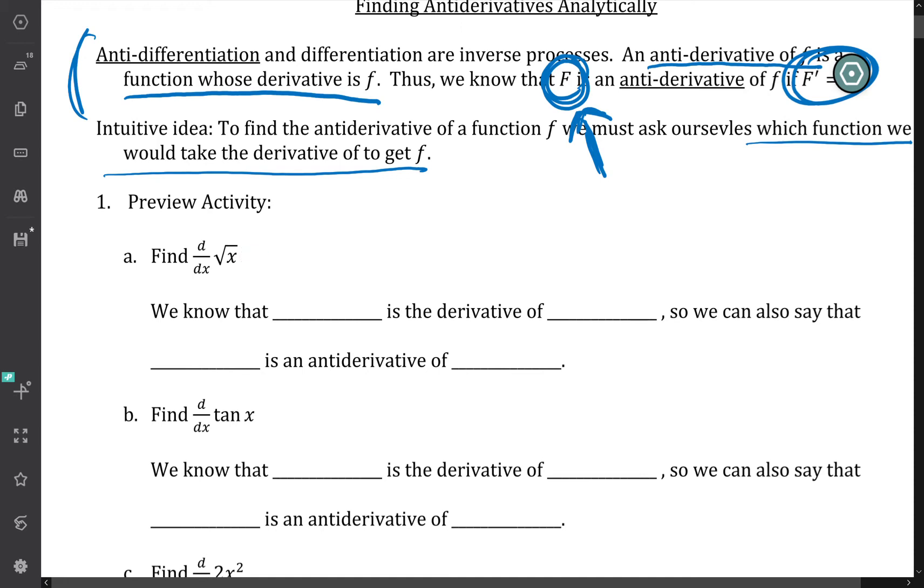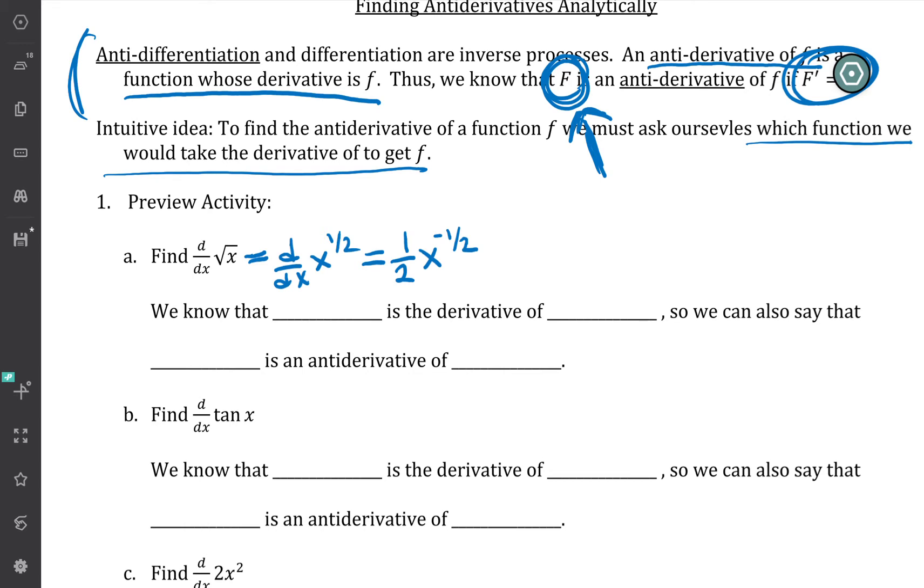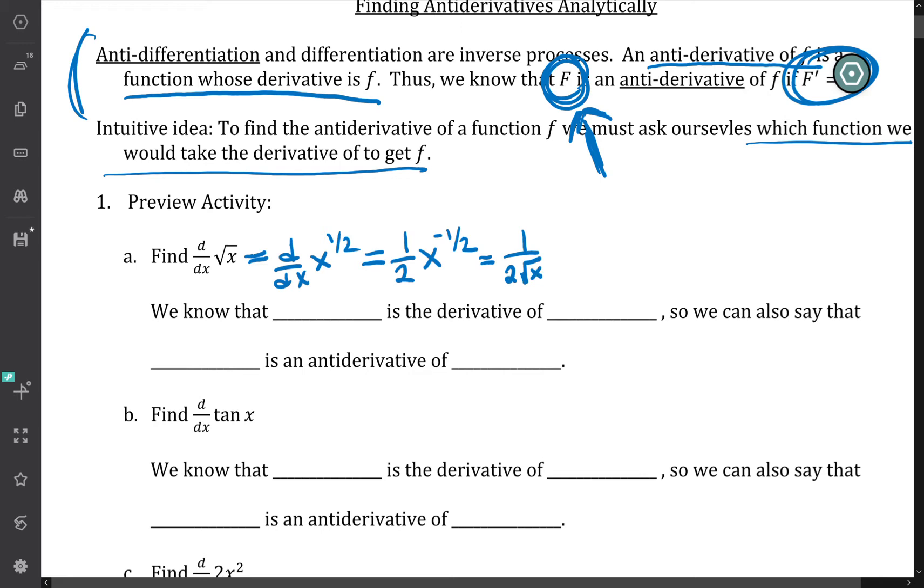Finding the derivative of the square root of x. Remember that we're going to want to use a power rule on this, so we first need to think about it as x to the 1/2 power, and then the power rule just says drop that down in front, and the new power will be one less than the old power. So now we can say, and I'm going to rewrite that just to make it look a little prettier, 1 over 2√x. We know that 1/(2√x) is the derivative of √x. So we can also say that √x is an antiderivative of 1/(2√x).